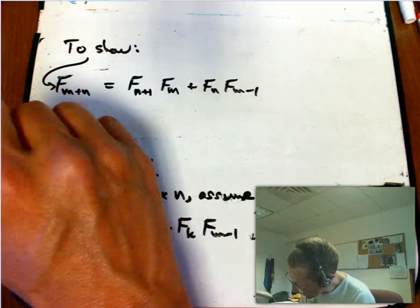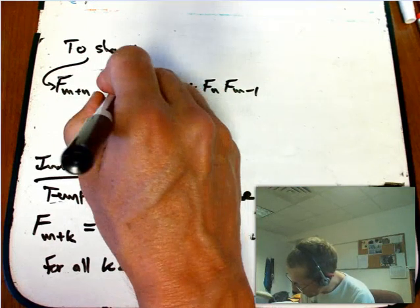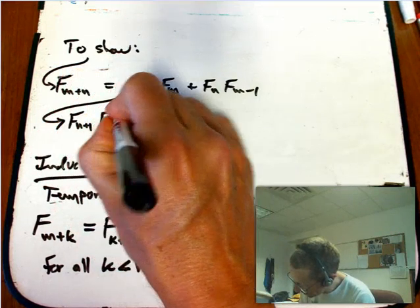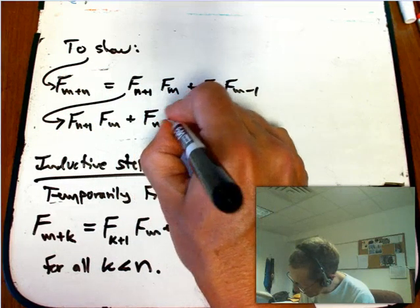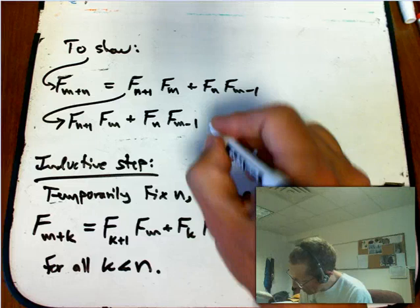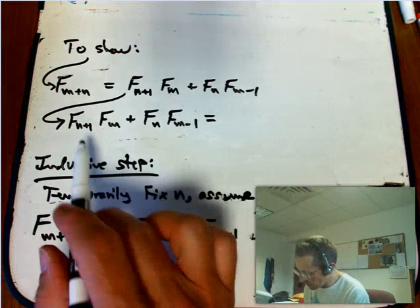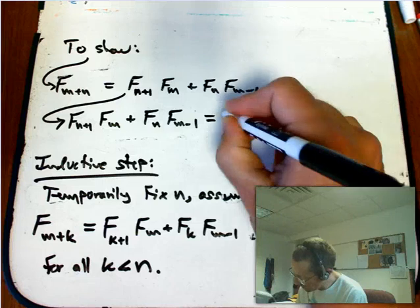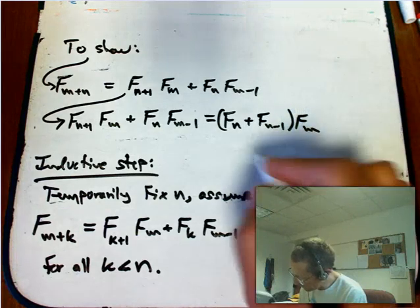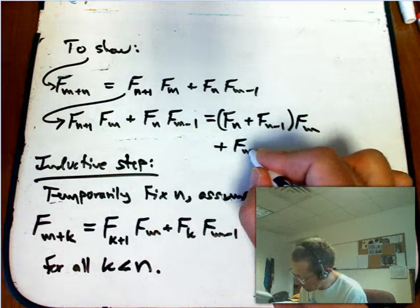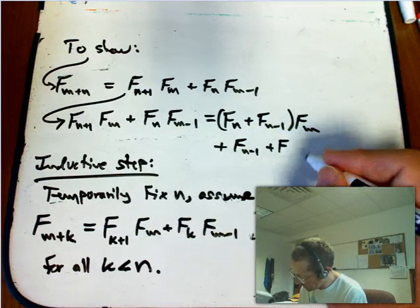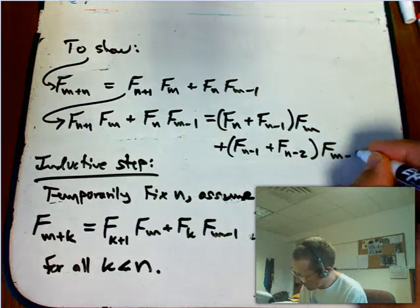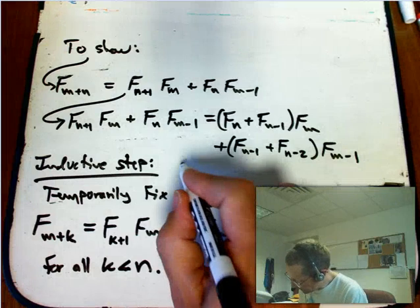So let's go ahead and do the same thing we just did in the previous examples. We're going to take f sub n plus 1 times f sub m plus f sub n times f sub m minus 1. And I'm going to expand that out. The f sub n plus 1 is an f sub n plus f sub n minus 1 times f sub m, plus the f sub n is an f sub n minus 1 times f sub m plus f sub n minus 2.